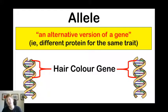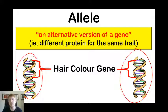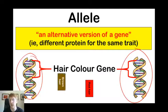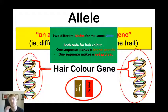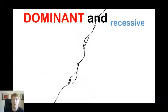So an allele is actually an alternate version of a gene, i.e. they code for a different protein but for the same trait. So for example, we've got two different people here — person A and person B. Both of them have a hair colour gene. The person on the right has the red hair allele. The person on the left has the brown-haired allele. These two different sequences code for different proteins, which is why we call them different alleles for the same gene. Both code for hair colour — one sequence makes a brown protein and the other sequence makes a red protein. And this is what an allele is: an alternate version of a gene.